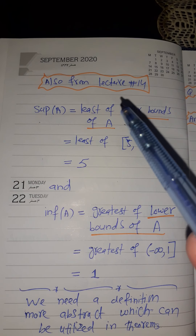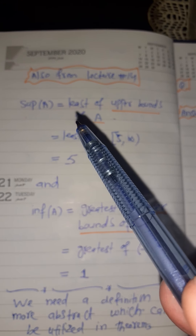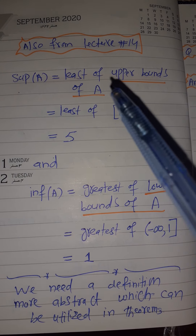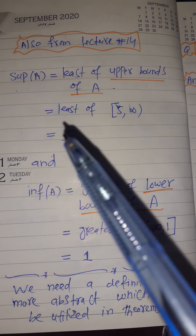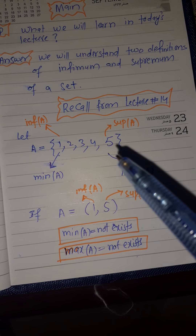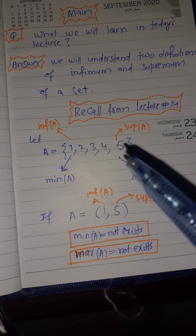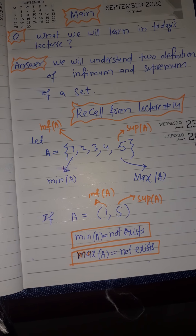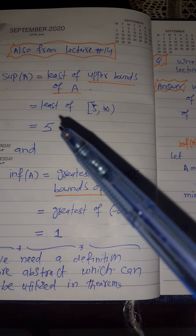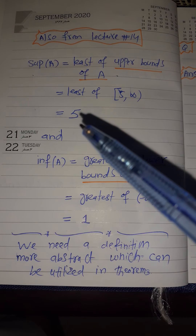Also recall from lecture number 14 how we calculated the supremum of a set: it is the least of the upper bounds of A. Upper bounds are numbers greater than or equal to all elements of the set — for example, 5, 6, 7, 8, 9, 10, 11, 12, 13, 14, 15, 16 are all upper bounds. The least among all these numbers is 5, which is the supremum.